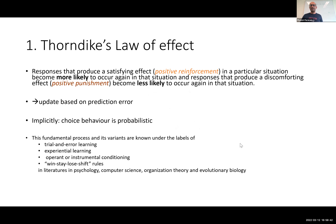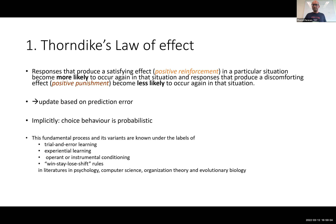This is captured in Thorndike's law of effect. The idea is very simple: responses or actions that produce a positive effect are more likely to be taken again. You do stuff and if the outcome is good, you do it again. If you do stuff and the outcome is bad, you don't do it again. That's it — very simple. And if you think about why that's happening, it's because the update is occurring on the basis of prediction error.